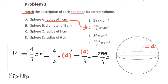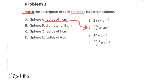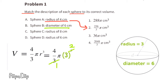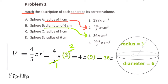Sphere A matches volume number two. Sphere B has a diameter of 6 centimeters. Since the radius is half the diameter, we substitute R with 3. 4 divided by 3 times 3 cancels, leaving 3 to the second power, which is 9. So the volume equals 4 times pi times 9, which equals 36 pi centimeters cubed. Sphere B matches volume 3.